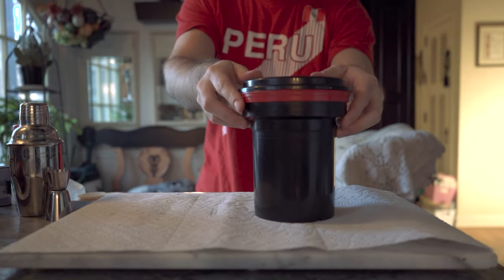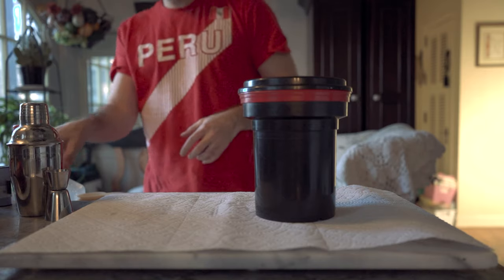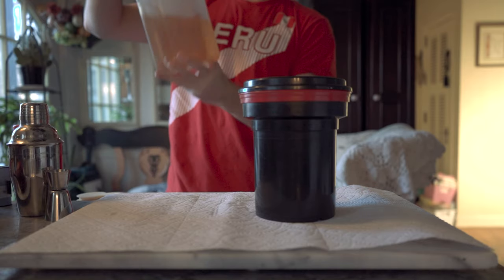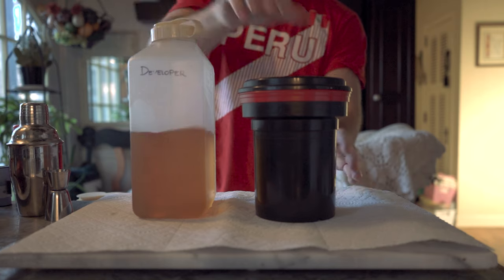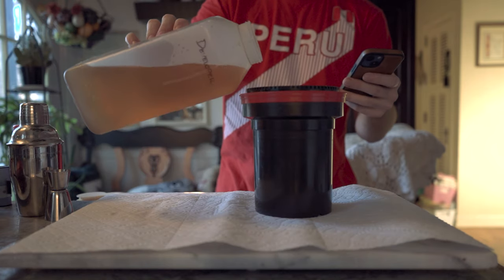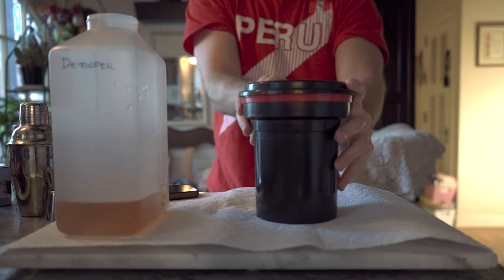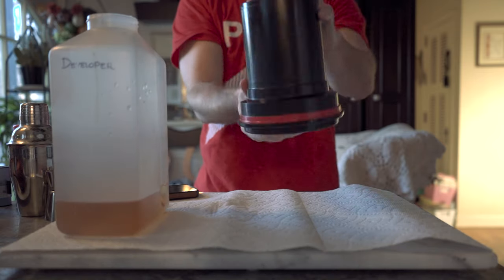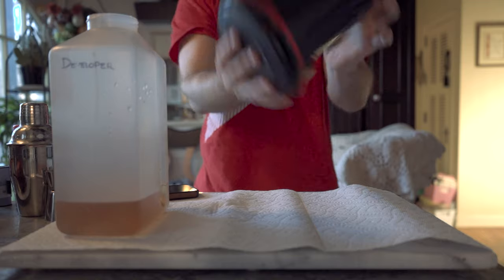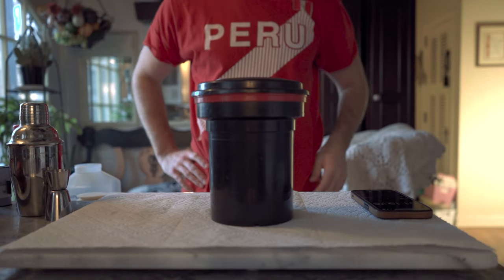Start with the developer. Begin pouring and start a timer for three and a half minutes. Agitate the chemicals for the first 10 seconds and then flip the tank four times every 30 seconds until the time runs out.